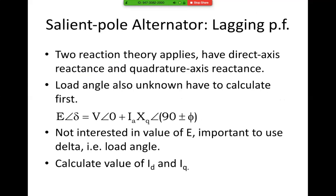Now if you look at the salient pole alternator, there we have the two-reaction theory. We have a direct axis reactance and a quadrature axis reactance. The load angle is also unknown and we have to calculate that first, using the formula E angle delta equals V angle zero plus Ia·XQ angle 90 plus or minus phi. We are not interested in the value of E — it is important to use the delta or load angle. So now we calculate the value of ID and IQ.